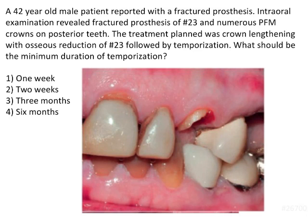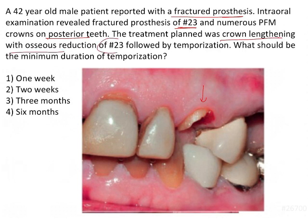This is a clinical case based question. A 42-year-old male patient reported with a fractured prosthesis. Intraoral examination revealed fractured prosthesis with tooth 2-3, which is the canine, as given in the image, and numerous PFM crowns on posterior teeth. The treatment plan was crown lengthening with osseous reduction for 2-3, followed by temporization. What should be the minimum duration of temporization? Options are one week, two weeks, three months, and six months.